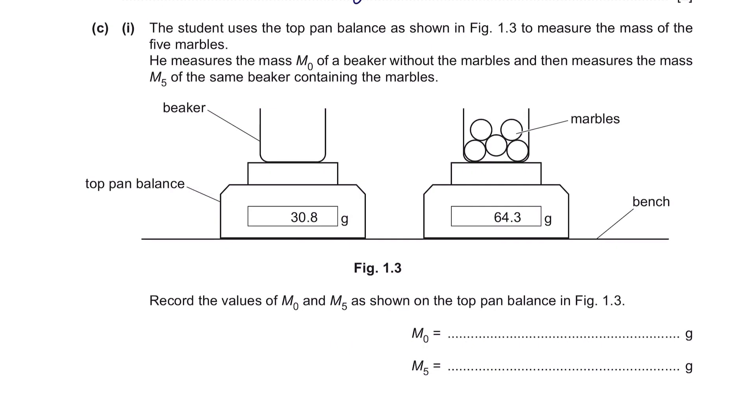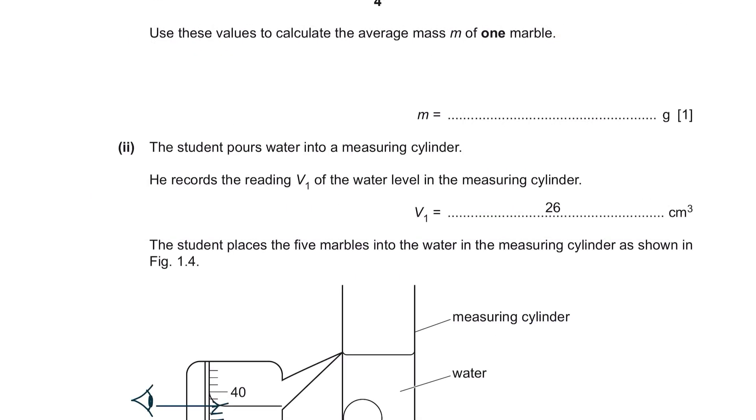Question C, part 1. The student uses the top pan balance as shown in figure 1.3 to measure the mass of the five marbles. He measures the mass M0 of a beaker without the marbles and then measures the mass M5 of the same beaker containing the marbles. Record the values of M0 and M5 as shown on the top pan balance in figure 1.3. Just write your value of M0 and M5. Next, use these values to calculate the average mass M of one marble. M0 was 30.8 and M5 was 64.3, meaning that the difference in their masses would represent the mass of five marbles. So, to find the average of one marble, we can just divide it by 5, giving us 6.7 grams.